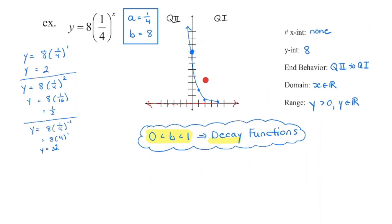The first type we looked at had b greater than 1, with the graph rising to the right. Both of these last two graphs are falling to the right — we call those decay functions. b cannot be a negative number, but if it's less than 1 and greater than 0 — remember it cannot equal 1 or 0 — we have a graph falling to the right: a decay function.